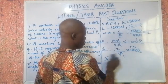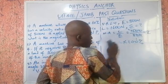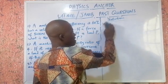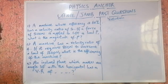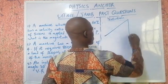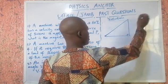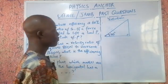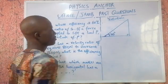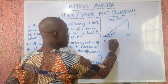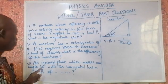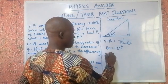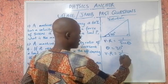Question three is very simple, but you need to know the formula. An inclined plane makes an angle of 30 degrees with the horizontal — what is its velocity ratio? The inclined plane looks like this: you're rolling a load up the slope at 30 degrees to the horizontal. The velocity ratio of an inclined plane is 1 over sine theta.